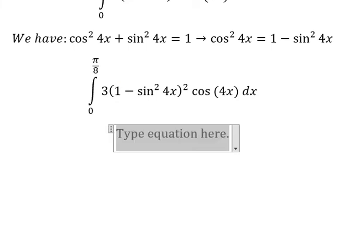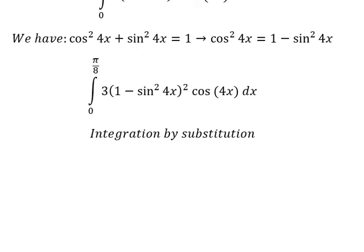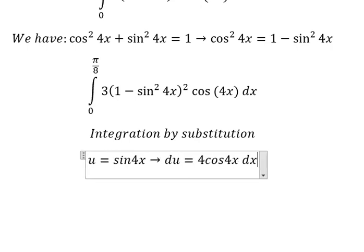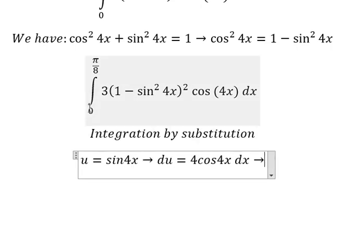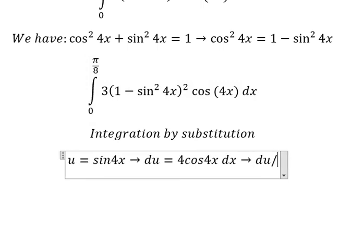Next, we need to use integration by substitution. I will put u equal to sine 4x, then du will be 4 cosine 4x dx. Because we don't have number 4 in here, we divide both sides by number 4.